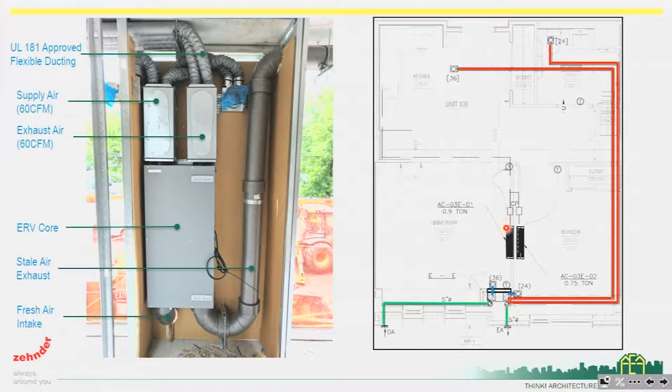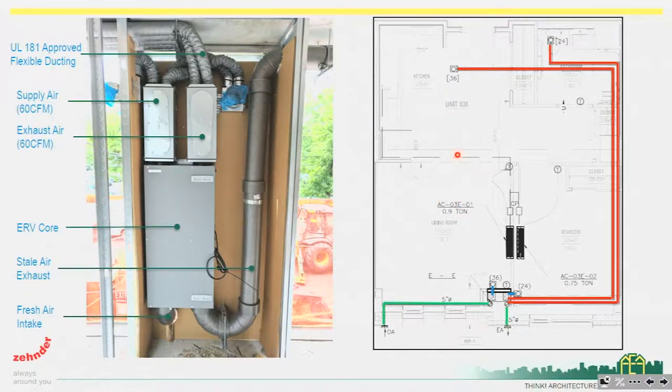By providing the supply air and the exhaust on separate sides of the apartment, we're going to have a good flow of air between the living spaces — a continuous flow of air through the unit in order to maintain a high level of indoor air quality, as well as trying to minimize any stale air.